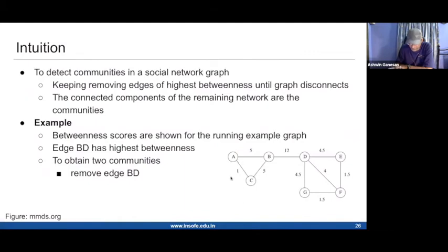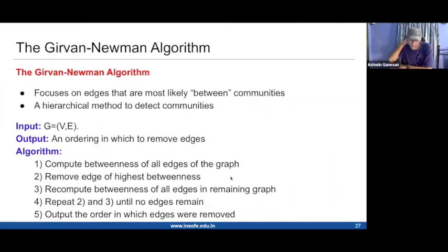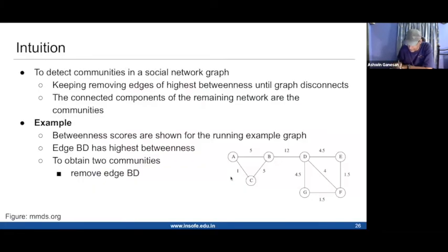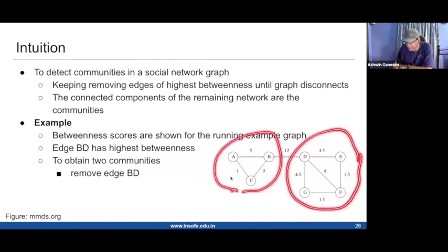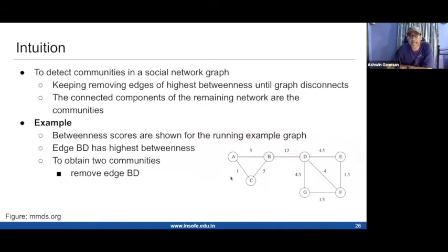What we see here in this running example is that the edge BD lies on a shortest path from A to D, because the shortest path from A to D has to go via this bottleneck edge. In fact, the shortest path from any vertex on the left side to any vertex on the right side must pass through this edge BD.